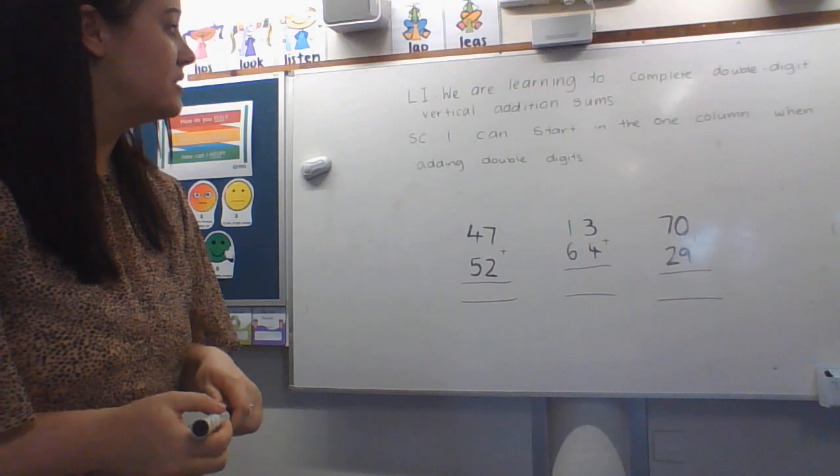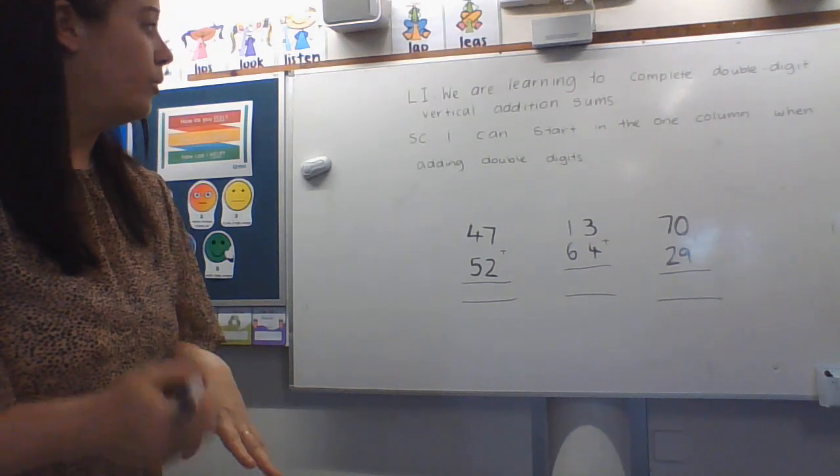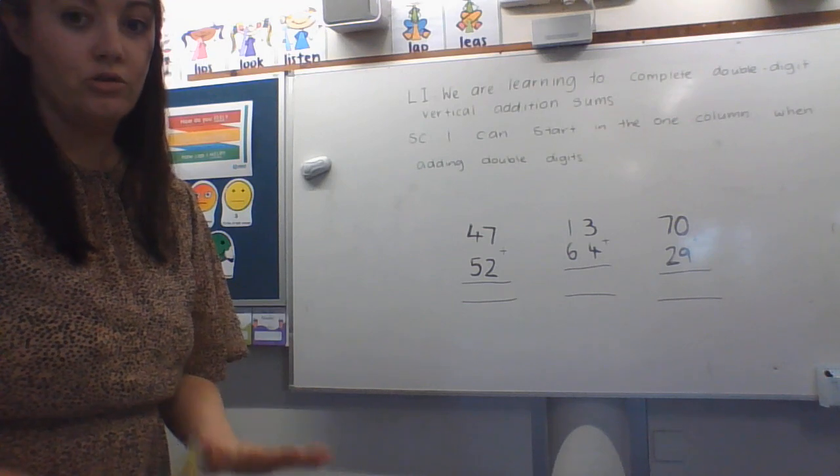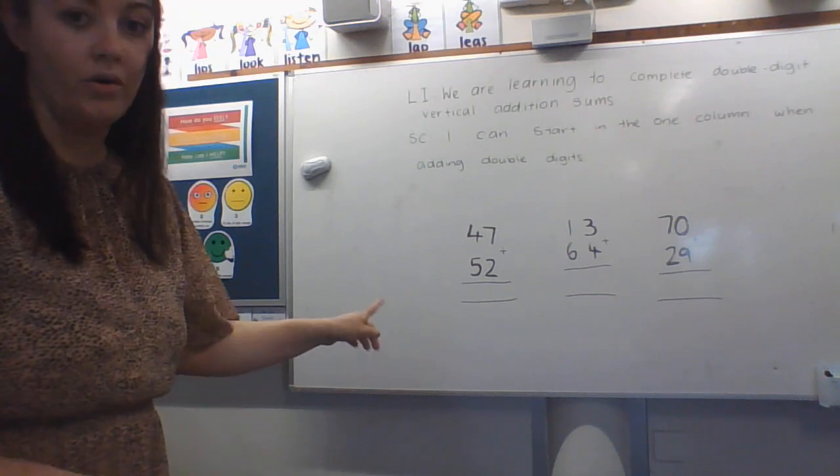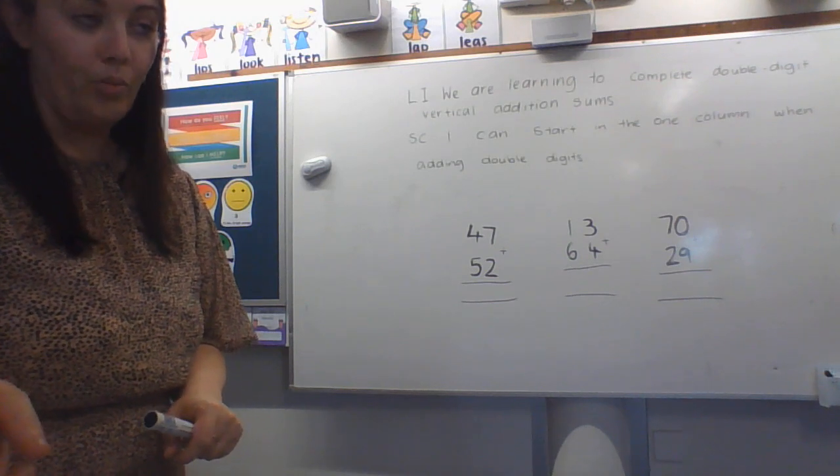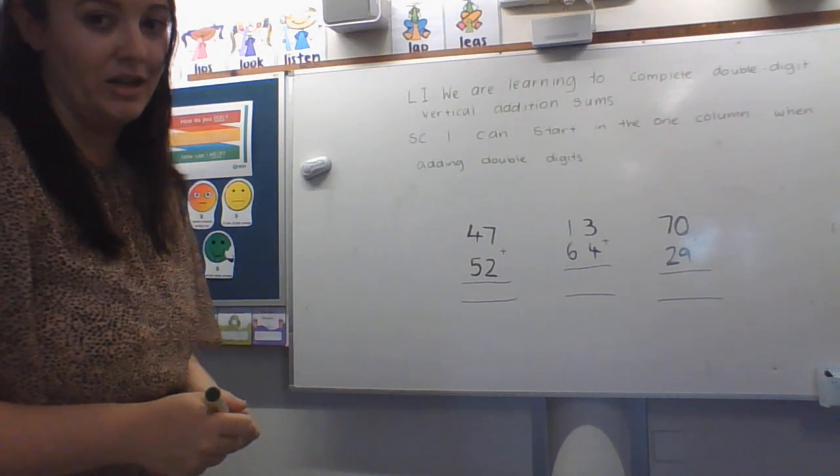Our success criteria is I can start in the ones column when adding double digits. We've done lots of this in class so this should just be super easy for you. So I'm going to start with the ones on the board. You have your own sheet to go on with once this is finished. This is just a bit of a demonstration.